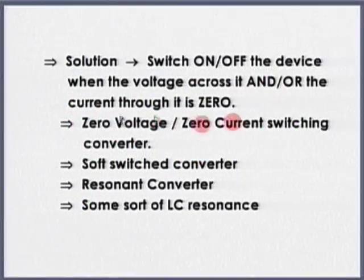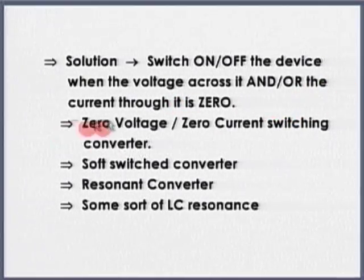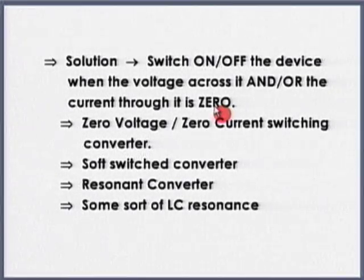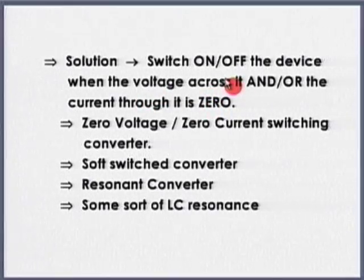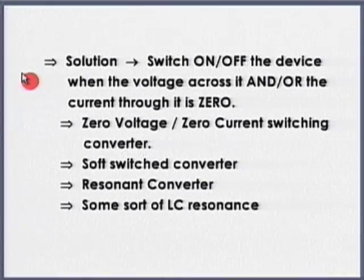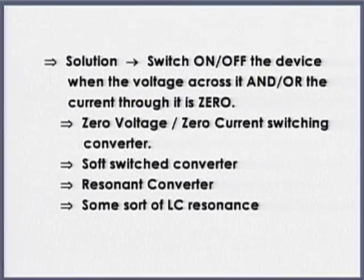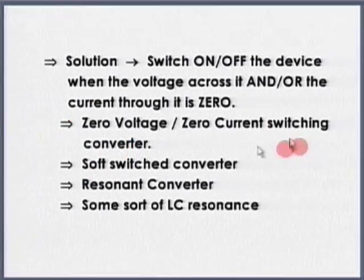Switching on of the device when the voltage across it and/or the current through it is zero. If you switch on or off only when the voltage across it is zero, it is known as zero voltage switching; if the current is zero, it is zero current switching; and if both are zero, it is zero voltage zero current switching.